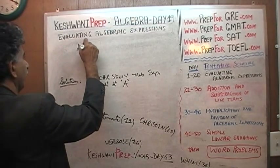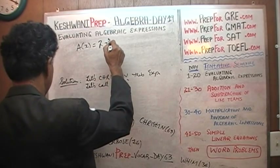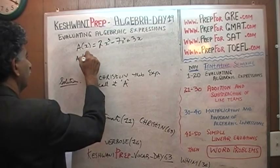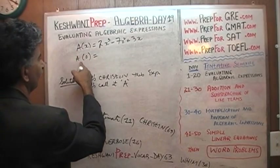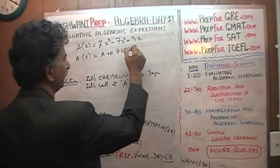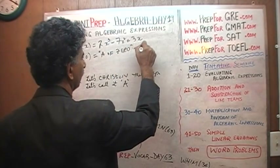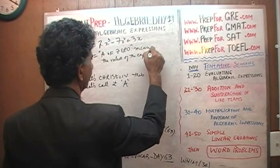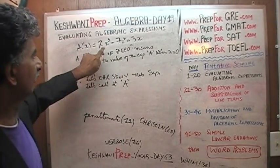The expression is A(x) = 2x³ minus 7x² plus 3x. We have to find A(0). This is read as 'A of 0.' A of 0 means the value of the expression A when x equals zero, which is exactly what we have to find.